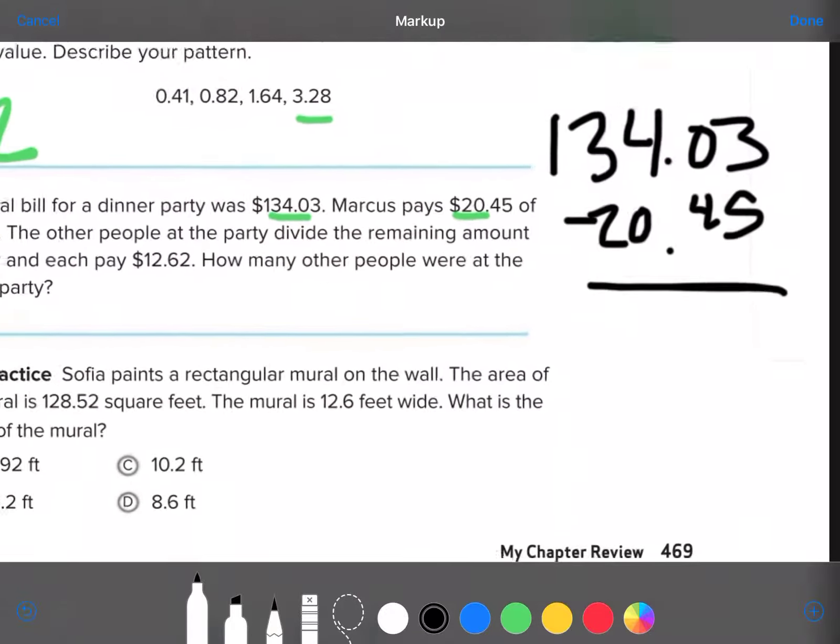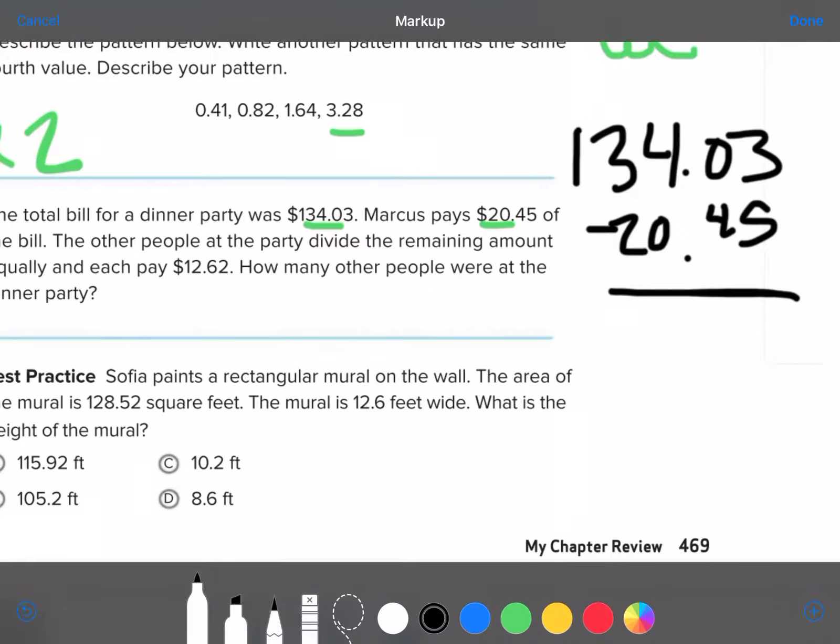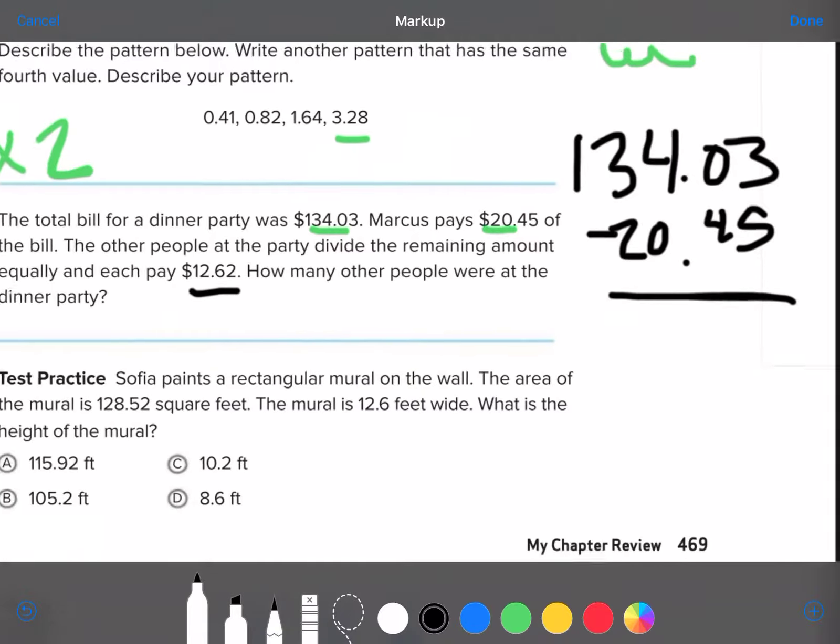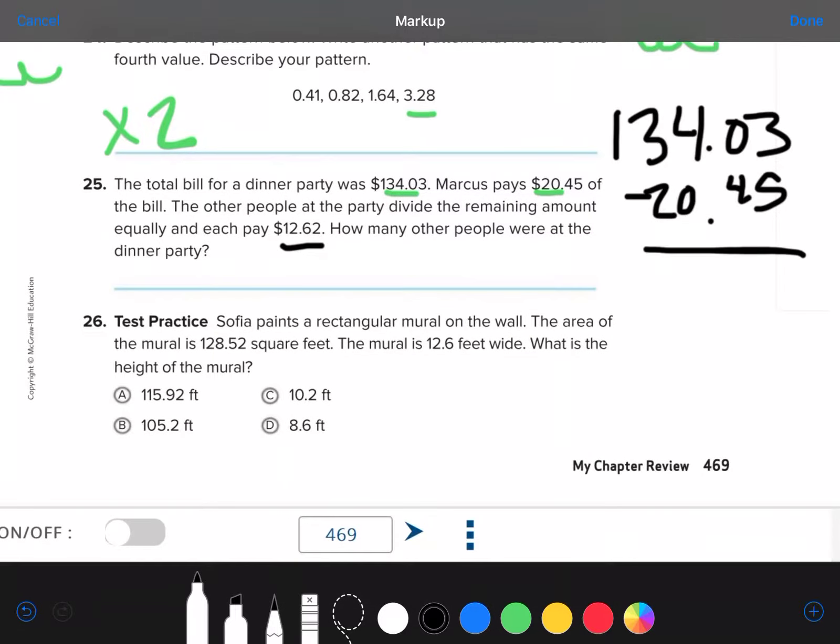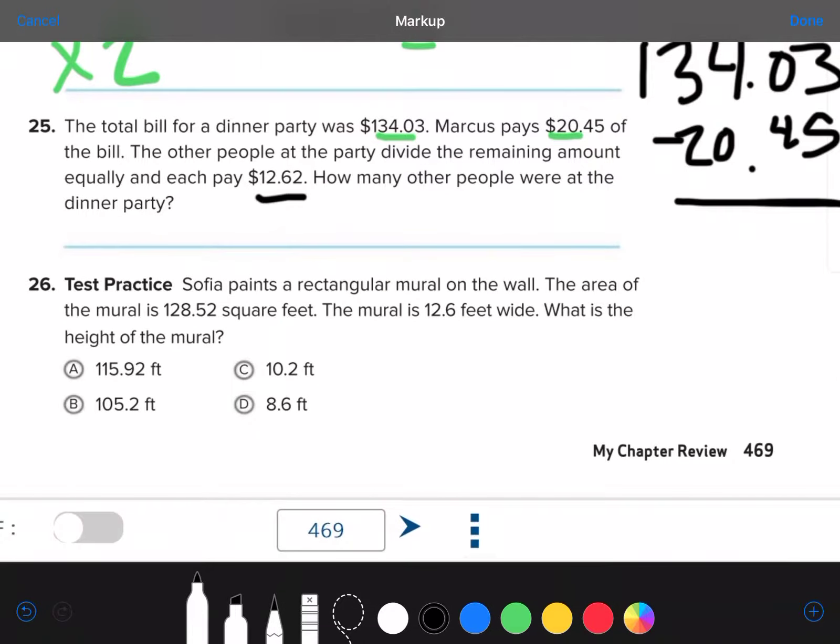Okay. Then, whatever number that is, we're going to divide it by this number. And, that will tell us how many people were at the party. Good luck with that one. You can use draft paper if you need to.